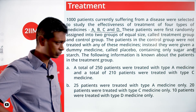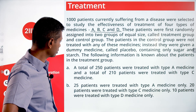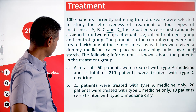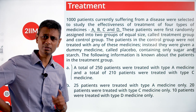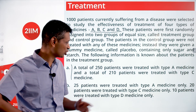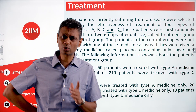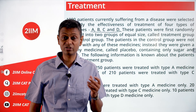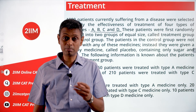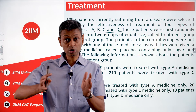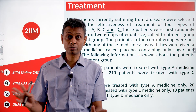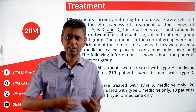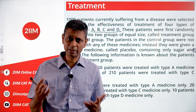In the treatment group, 250 patients were assigned type A medicine and 210 were treated with type C medicine. Adding these gives 460 — but there are 500 total — which means patients received combinations like A and C, B and C, A, B, C, D, etc. So we're dealing with set theory: A∩B, B∩C, and all such intersections are going to be present.